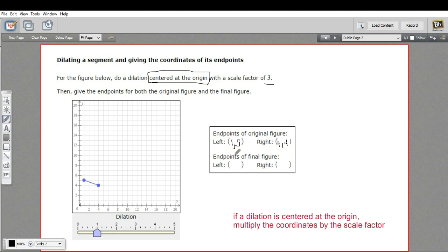All right. So if we want to make this dilation, we just multiply by the scale factor, which is three. So one times three is three and five times three is 15. So our left endpoint is going to be at the point (3,15). So three and 15.